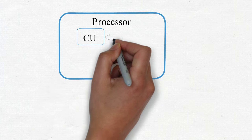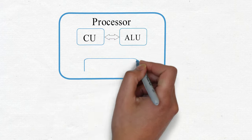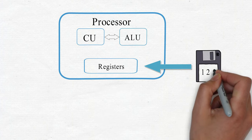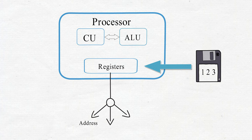A processor also has small and high-speed memory called registers. It stores temporary data like addresses, commands, results, etc.